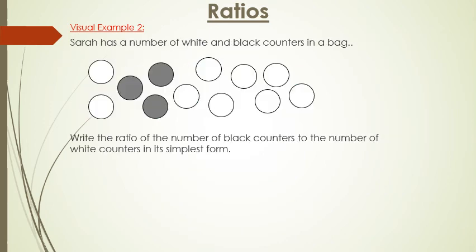Okay this is another example. Sarah has a number of white and black counters in a bag. You need to write the ratio of the number of black counters to the number of white counters in its simplest form.